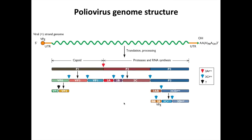This polyprotein is processed by two proteinases. The 3C-pro cuts at all the blue triangles or arrowheads, and the 2A-pro cuts at one position between P1 and P2. There is one additional processing event that cleaves VP0 to VP4 and VP2 - this happens late in maturation, and we do not understand how that is done. The protease has not been identified.